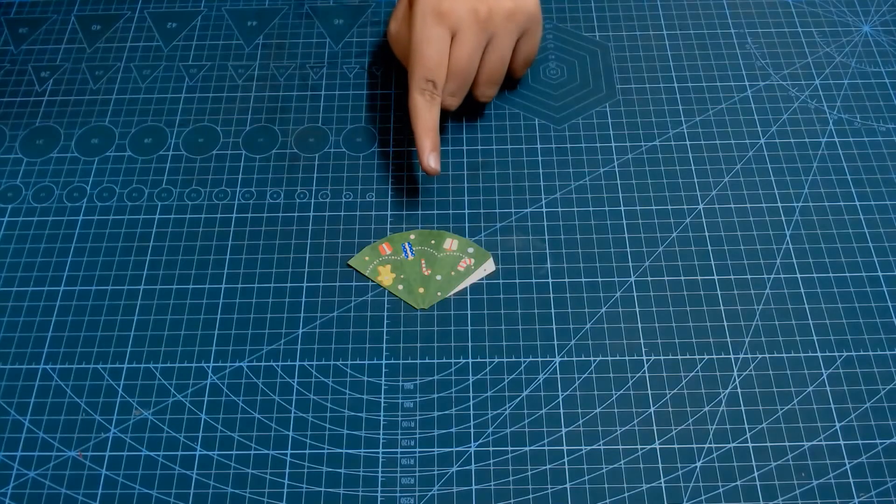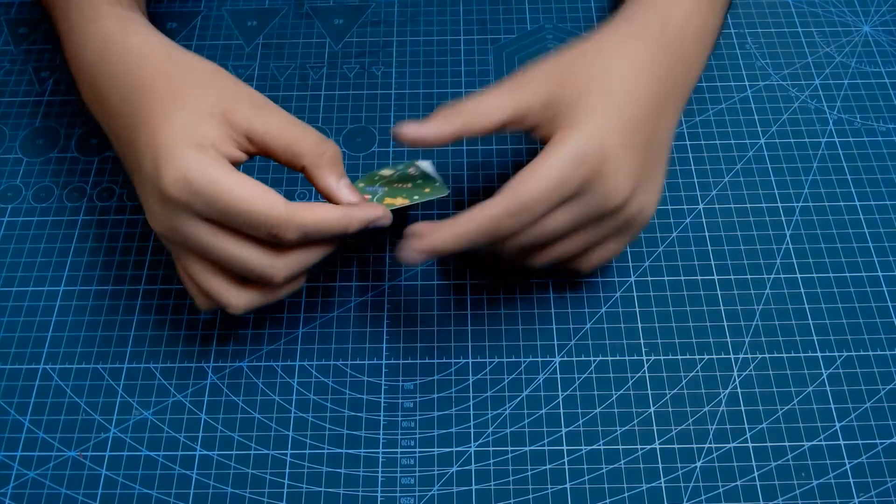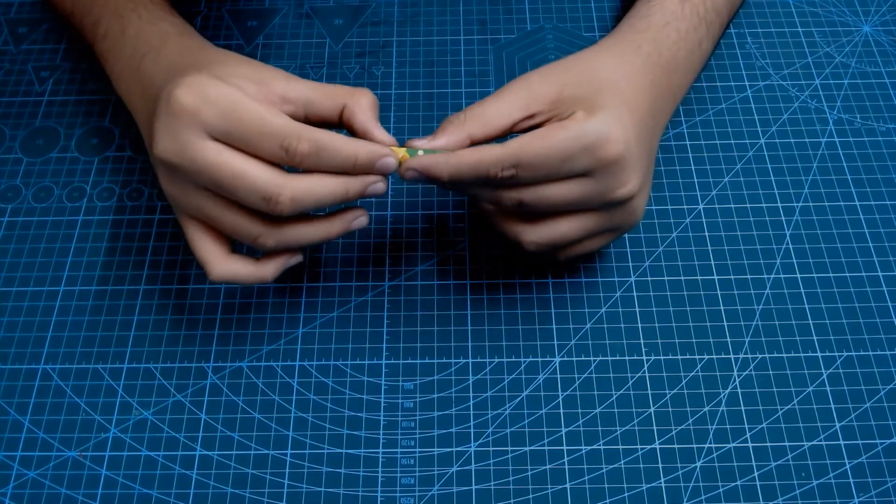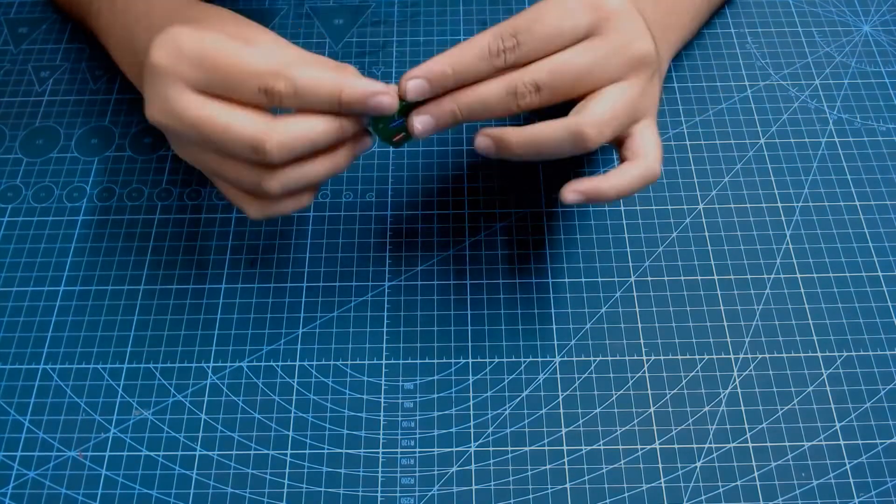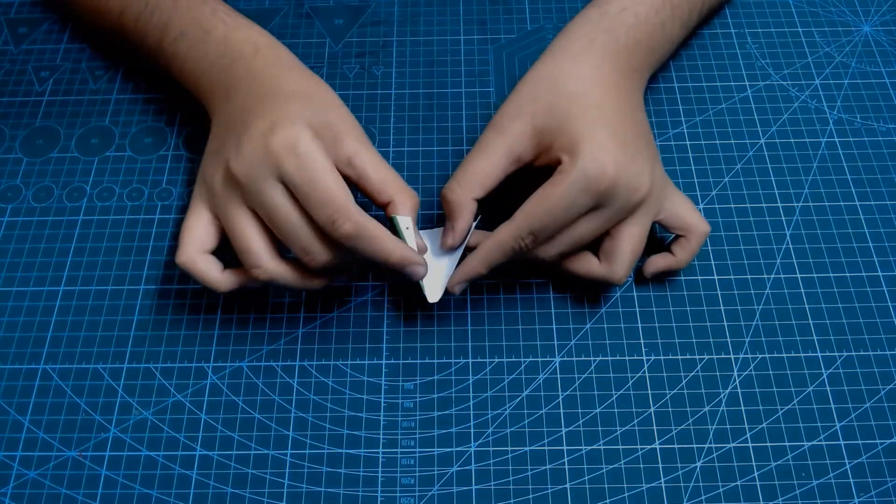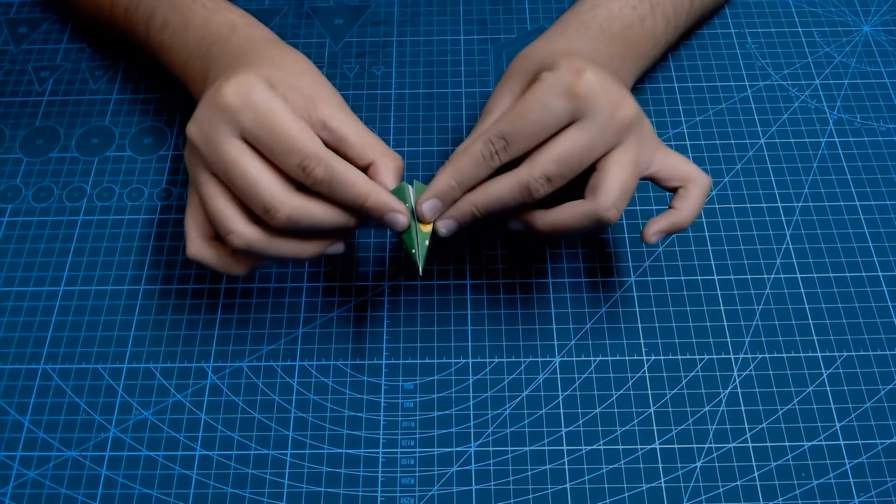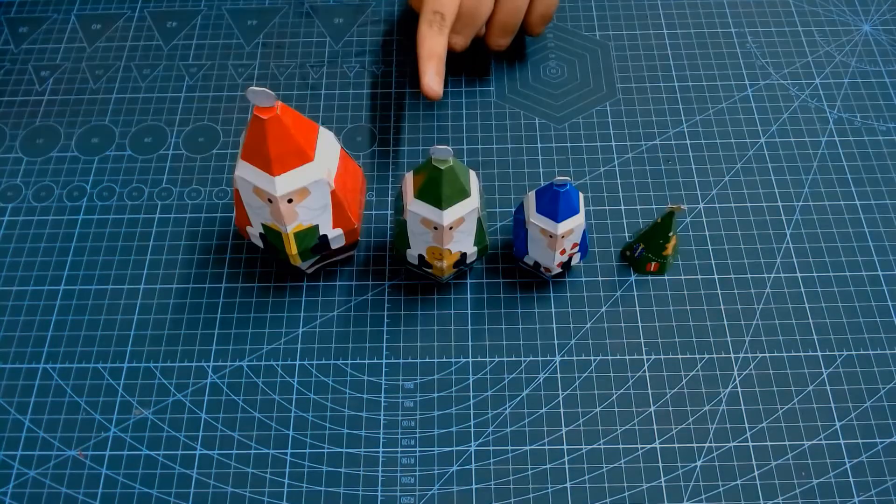Now, we're going to have to assemble this tiny Christmas tree. To do that, we're going to start folding on these lines. And then, what you're going to have to do is apply glue here and just stick it and you're done.